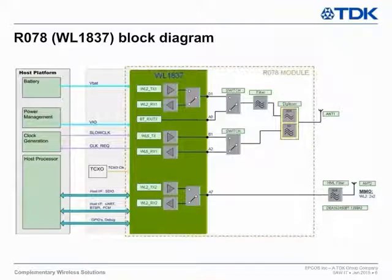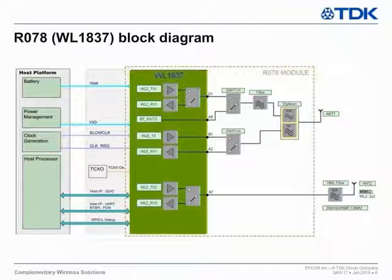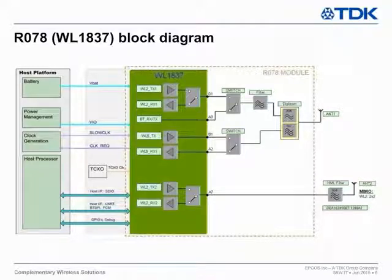Let's take a quick look into the system. The dotted line represents the module. The main component in the module is a green block, WL1837. An upper switch is switching between 2.4 GHz wireless LAN and Bluetooth. The signal goes through a 2.4 GHz SAW filter into the diplexer, and then into the external antenna. The second switch is switching between 5 GHz transmit and receive, then via the HB part of the diplexer, into the same dual-band external antenna.